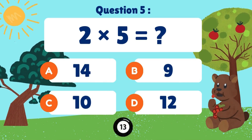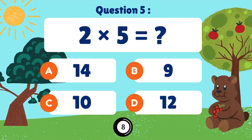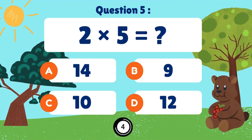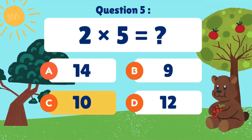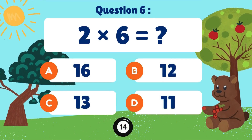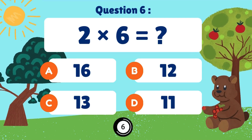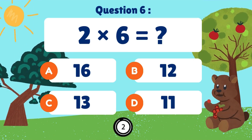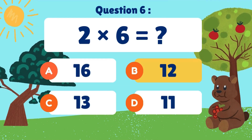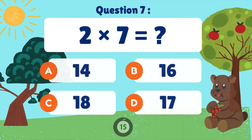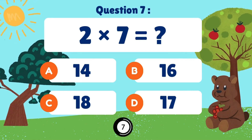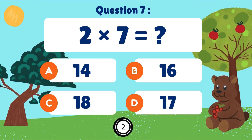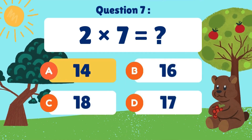Two times five. Two times five equals ten. Two times six. Two times six equals twelve. Two times seven. Two times seven equals fourteen.